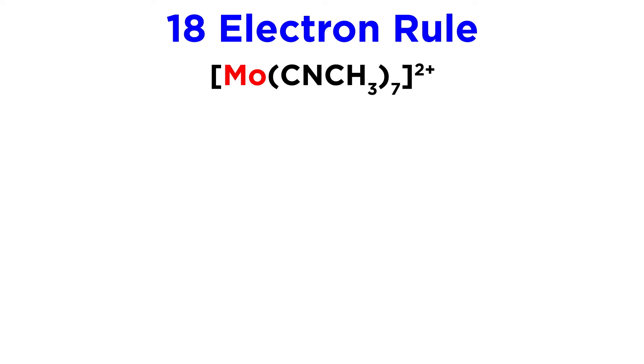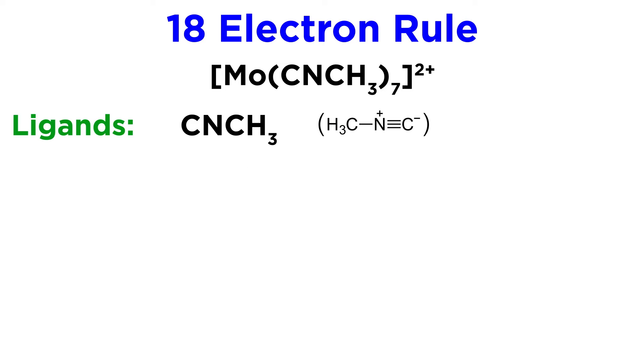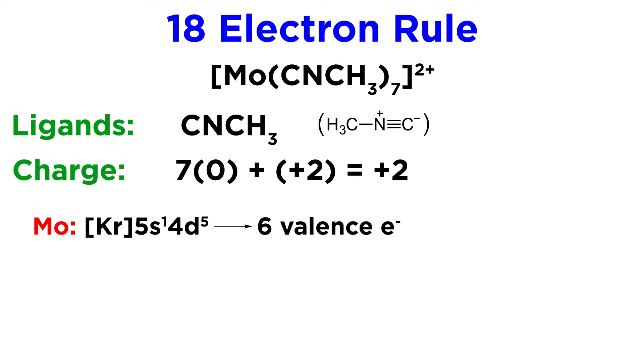How about this other molybdenum complex, with seven methyl isocyanide ligands, and an overall two plus charge? That's right, some complexes can even be heptavalent. All of these ligands are neutral, so molybdenum must have an oxidation state of plus two, to get to the formal charge on the complex. We just mentioned that molybdenum has six valence electrons, so with an oxidation state of plus two, it must have four electrons.